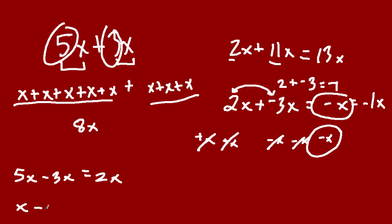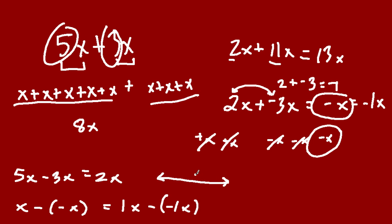And if you had something like x minus negative x, this might seem confusing, but let's break it down. x here is just 1x, and what you're doing is taking away a negative x, or negative 1x. When you're subtracting a negative 1, you're really adding. If you think about it on the number line: if I had the number 1 and I took 1 away, I'd go to the left, to 0. But I'm taking negative 1 away, not positive 1, so I go in the opposite direction. So 1x minus negative x is really 1x plus x, or 2x.